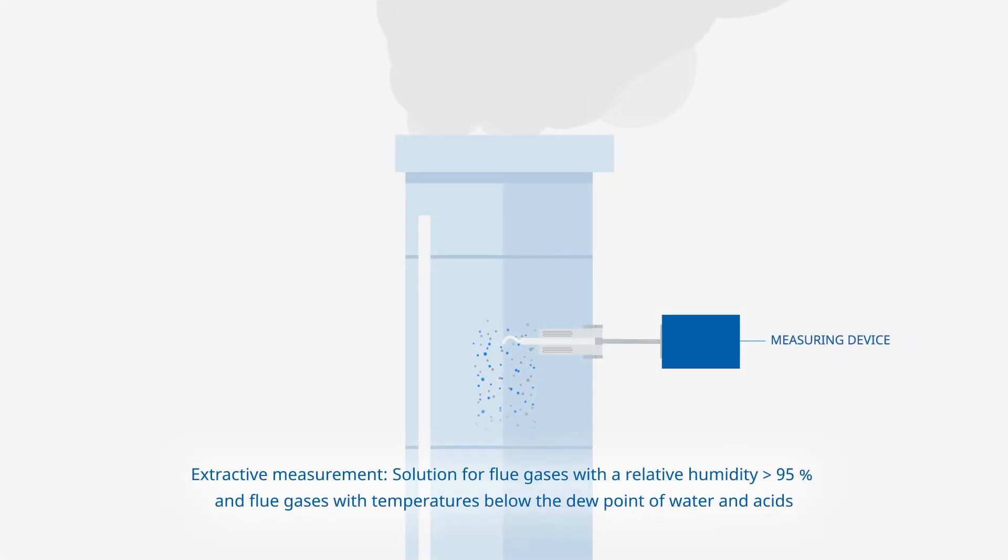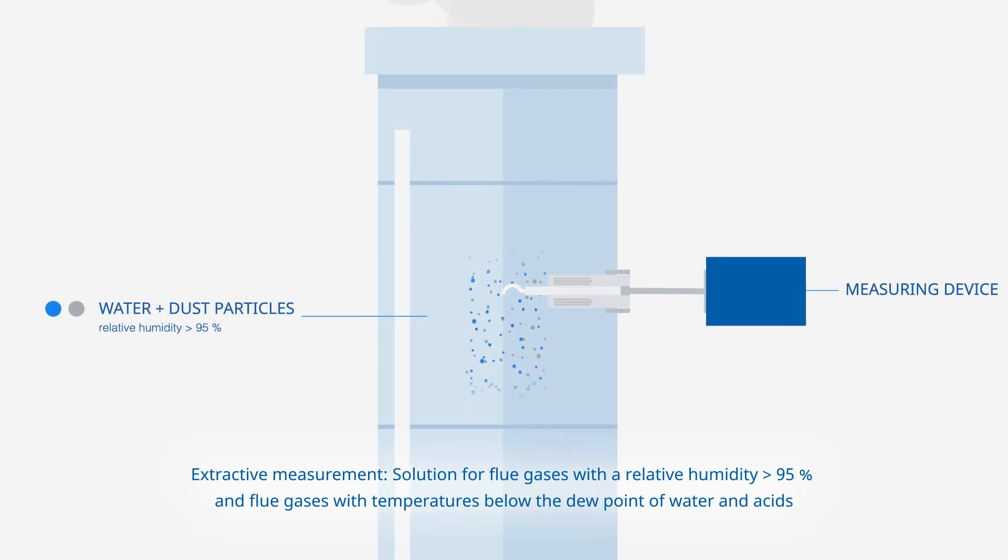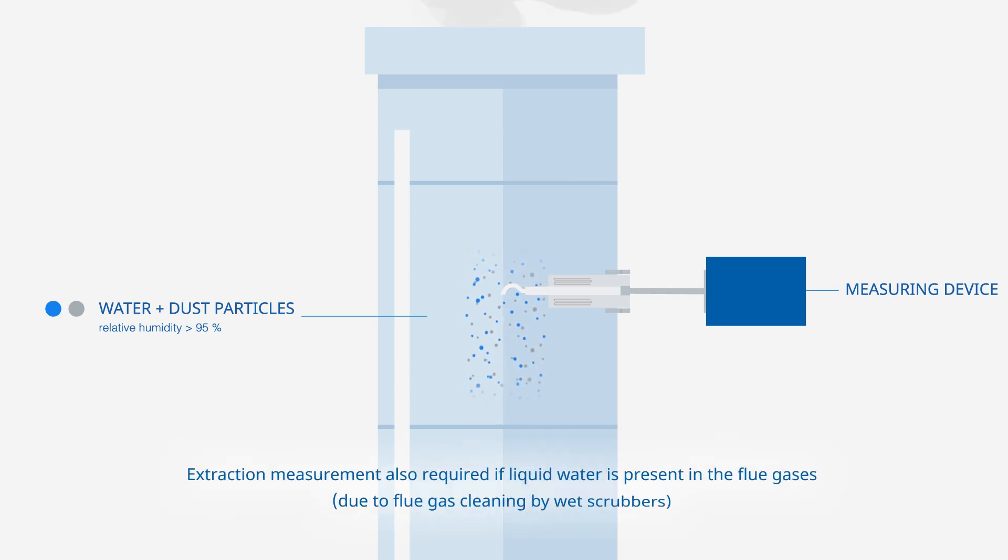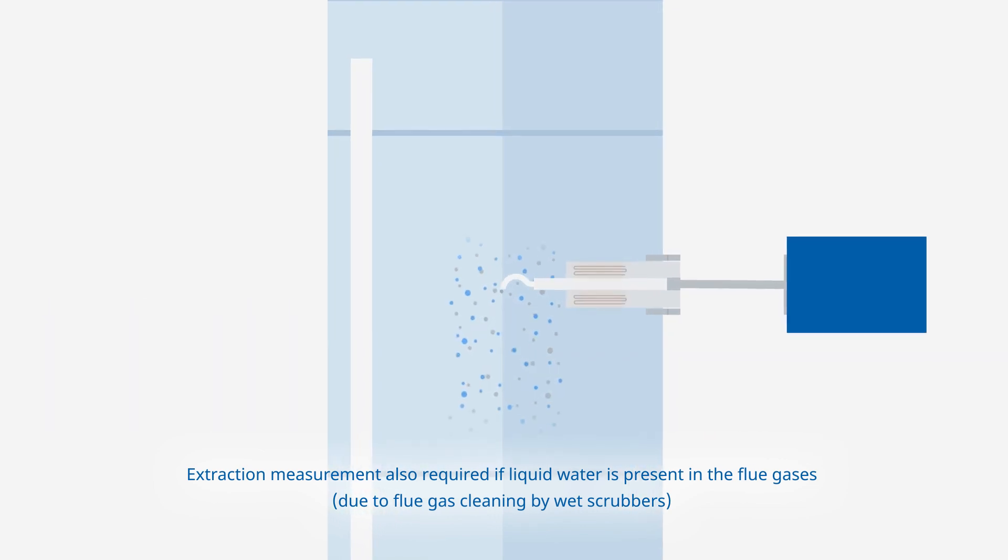Extractive measurement is the solution for flue gases with a relative humidity higher than 95% and flue gases with temperatures below the dew point of water and acids. Extraction measurement is also required if liquid water is present in the flue gases due to flue gas cleaning by wet scrubbers.